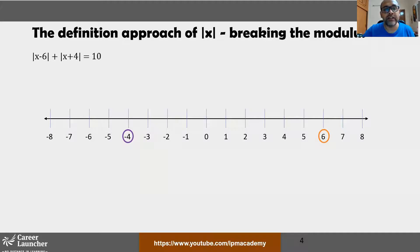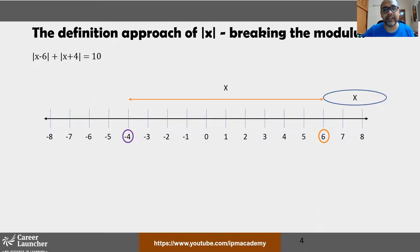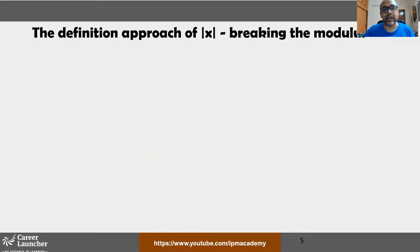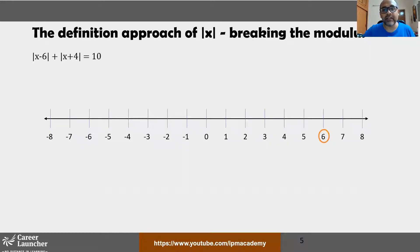These two boundary points divide the entire number line into three regions: to the right of 6, between 6 and −4, and to the left of −4. We will search for x in each of these three regions. Let's start with the first region — x to the right side of 6.